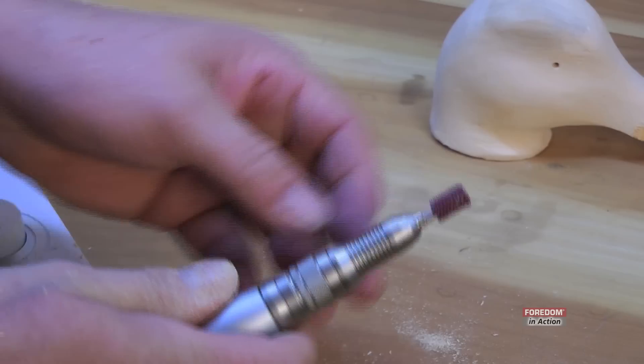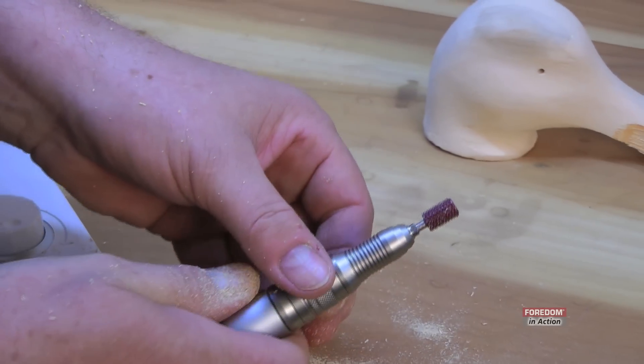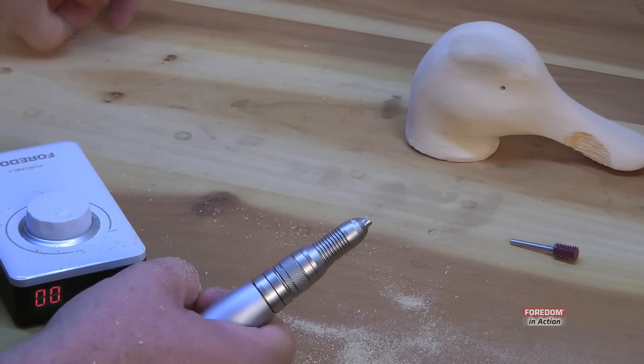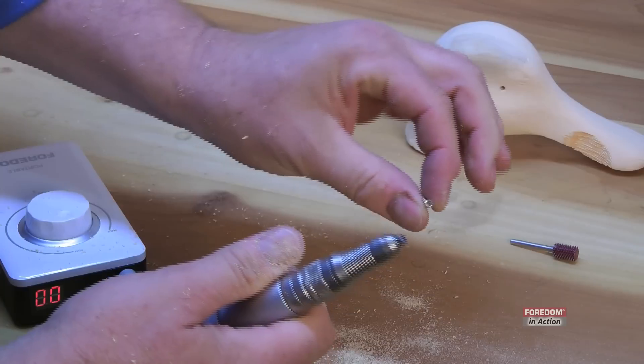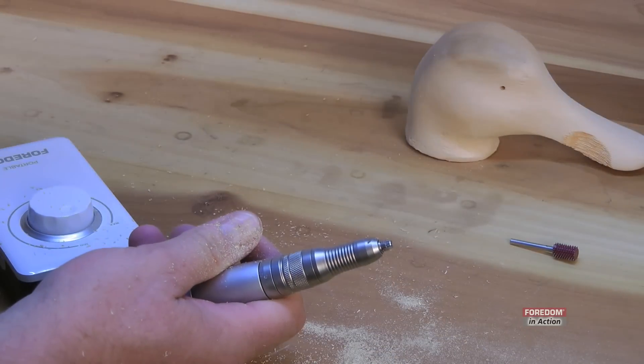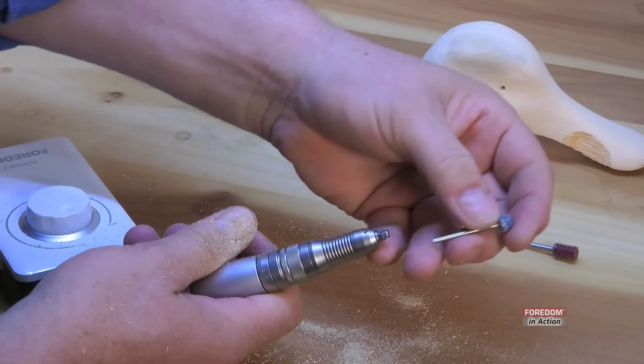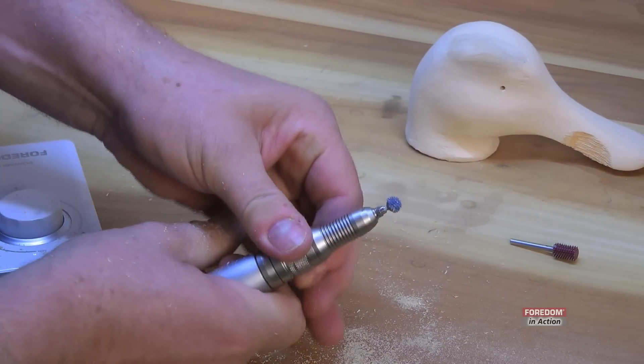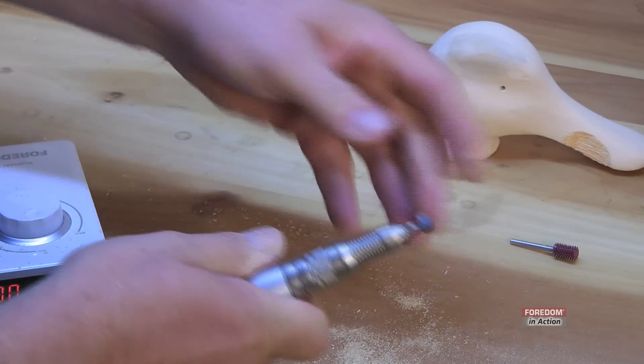I'll show you what I mean by collet reducing sleeves, how easy that is. Instead of changing the collet, you take your 1/8 shank burr out. You slip in the collet reducing sleeve. And then you can put in another smaller shank burr. Tighten it down. Lock it.